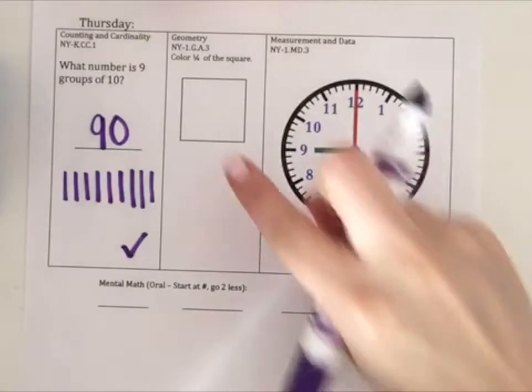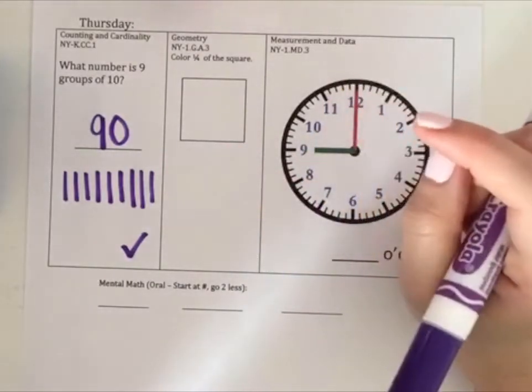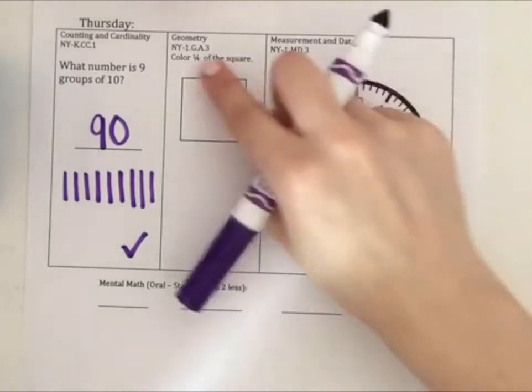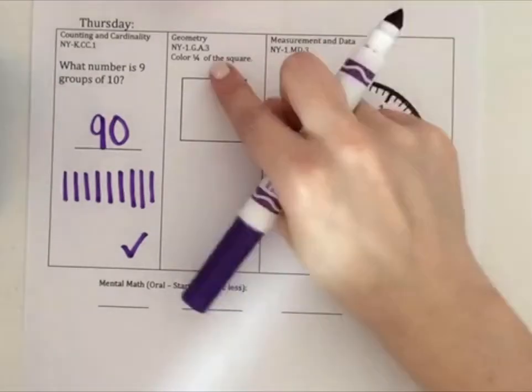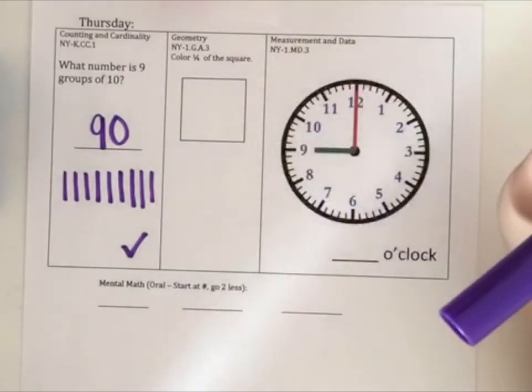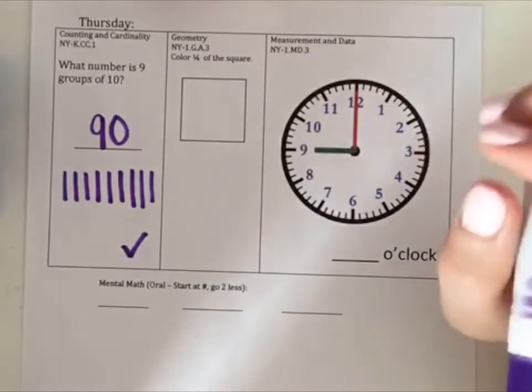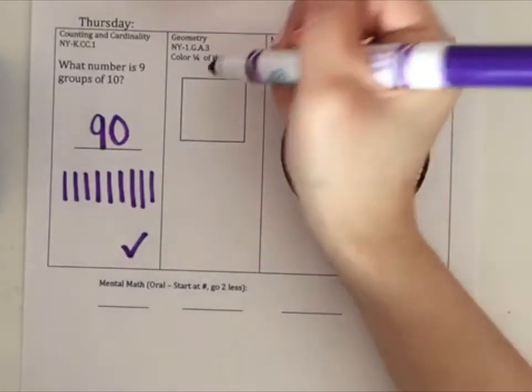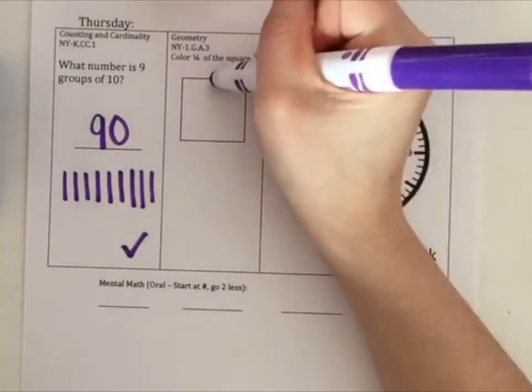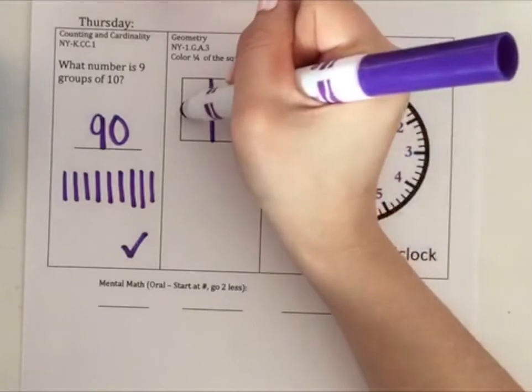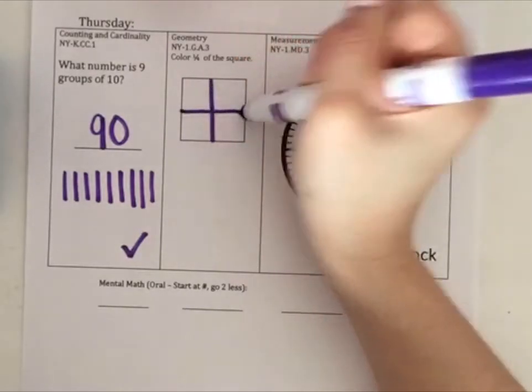In our next box, it says color a quarter of the square, one-fourth. One-fourth can also be said as a quarter of. We need to make the square into four parts. One way to break the square into four parts is to draw one line down the middle here, and then one more line across the middle here.